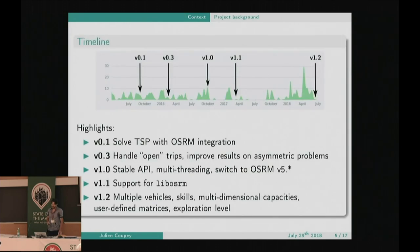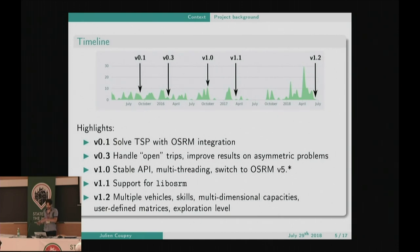To give some background on the project: it all started as a proof of concept that one could solve TSP very efficiently with real-life data based on OpenStreetMap and full OSRM integration. We've had several releases since. Version one was about designing a stable API and some work on multi-threading. We also support the use of OSRM as a library, which enables computing matrices faster since we use OSRM directly from C++. The latest release, about one month ago, is about handling multiple vehicles.